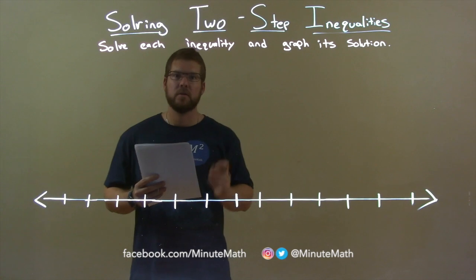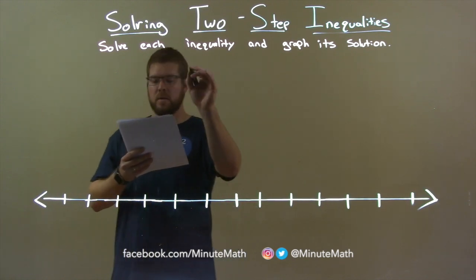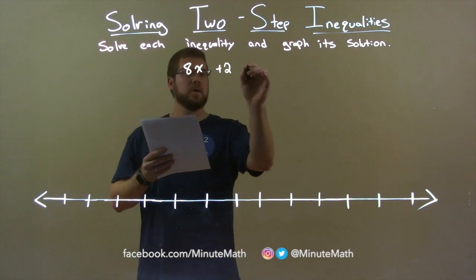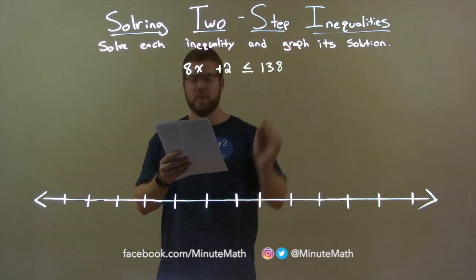Now, if I was given this inequality: 8x plus 2 is less than or equal to 138.